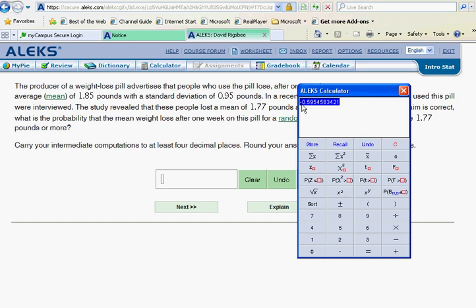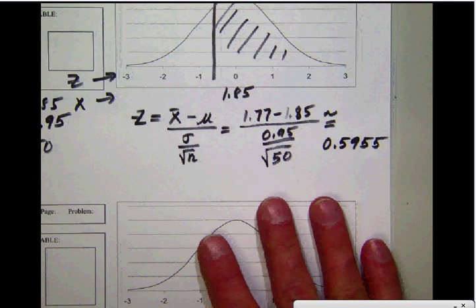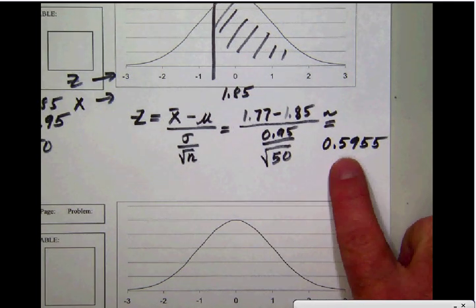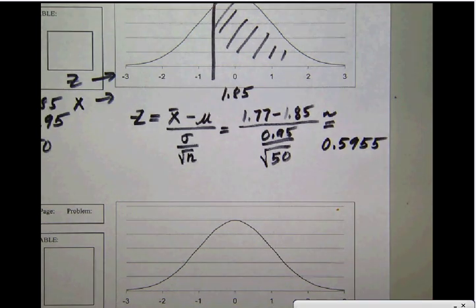Since that next digit is greater than five, we'll roll that last digit up. So our z-score will be -0.5955.